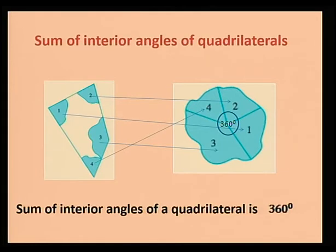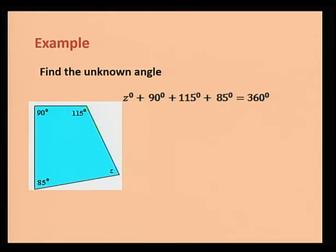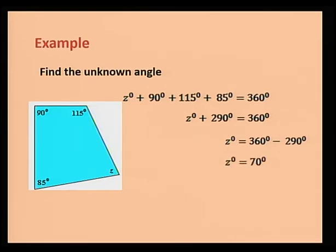Let's see some examples using the sum of interior angles of a quadrilateral. Example one: find the unknown angle in this quadrilateral. Three of the angles are 90°, 115°, and 85°, and the fourth is Z°. So, Z° + 90° + 115° + 85° = 360°. Adding 90° + 115° + 85° = 290°, so Z° = 360° − 290° = 70°.